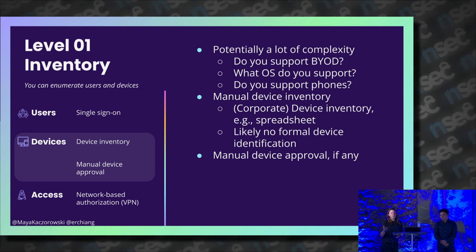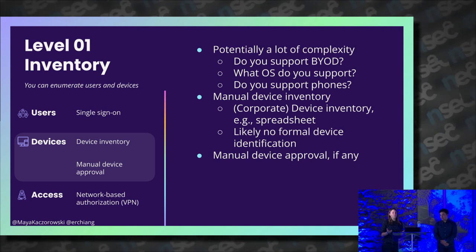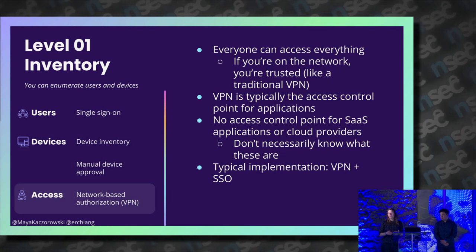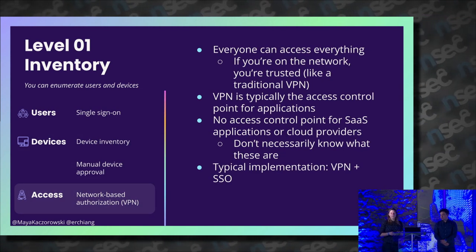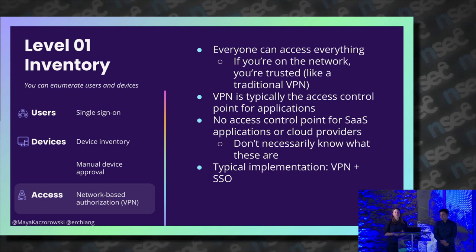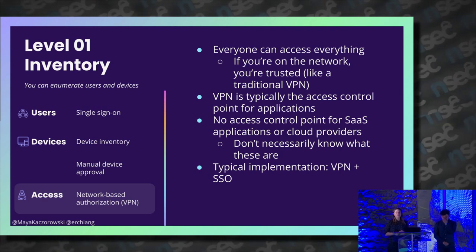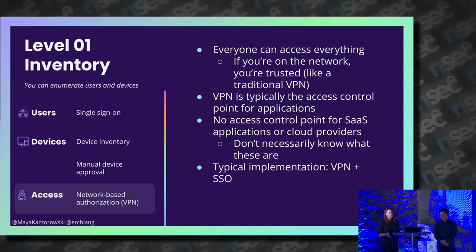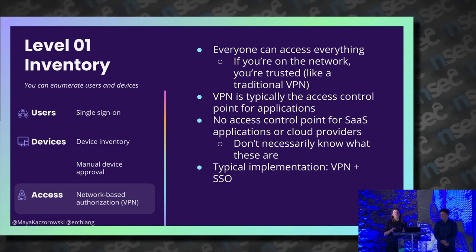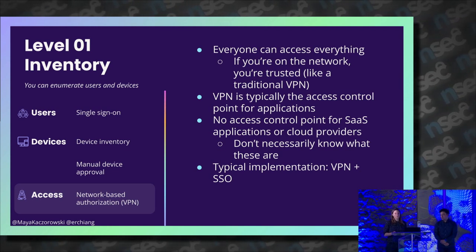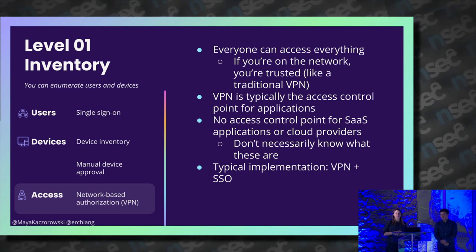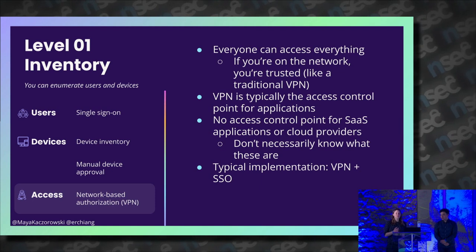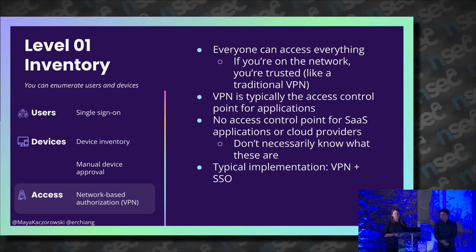Before you let a user connect to a network, you might have some manual verification that it's actually the expected device. At Level 1 in terms of access, it's that flat, traditional network where if you're on the network, you're trusted — like a traditional VPN. You can ideally control what users and devices are on the network given your inventories, even if it's manual, but you're not segmenting users or devices any further. If you're only dealing with corporate devices and self-hosted applications, having a VPN plus an SSO is a pretty good initial set of tools to limit access to your internal applications.